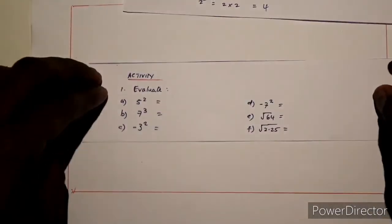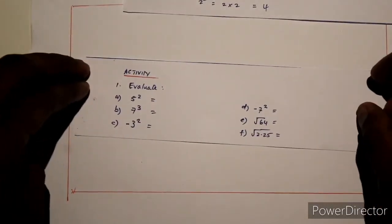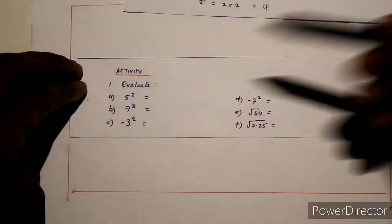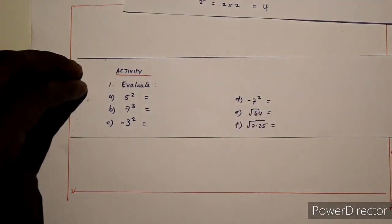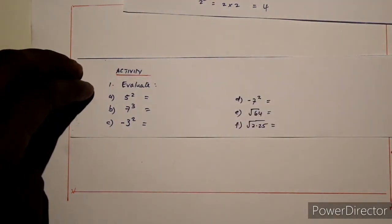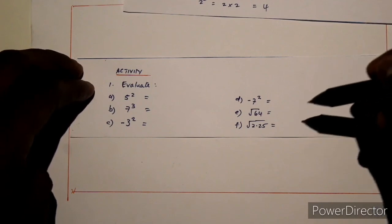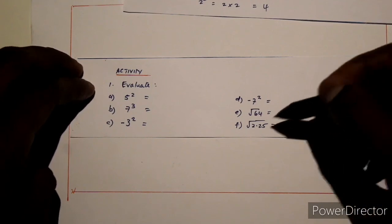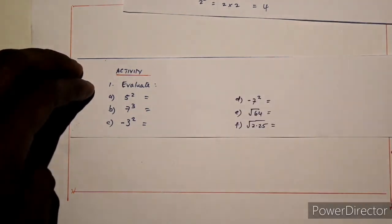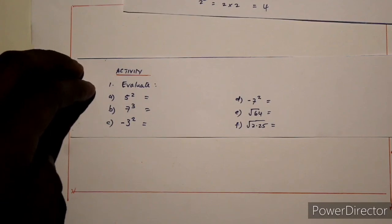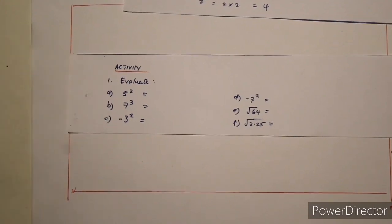With that in mind, you can try a couple of activities to test your skills. Try these activities first, come up with the right answers, and you can confirm them with your calculator. But first, do it manually and then confirm with your calculator. Good luck.